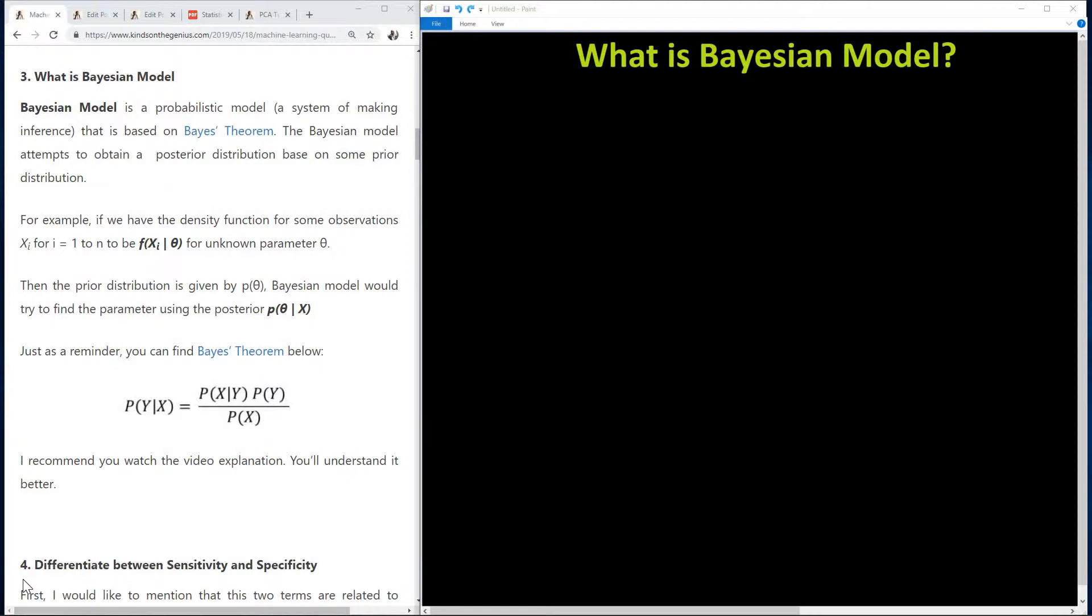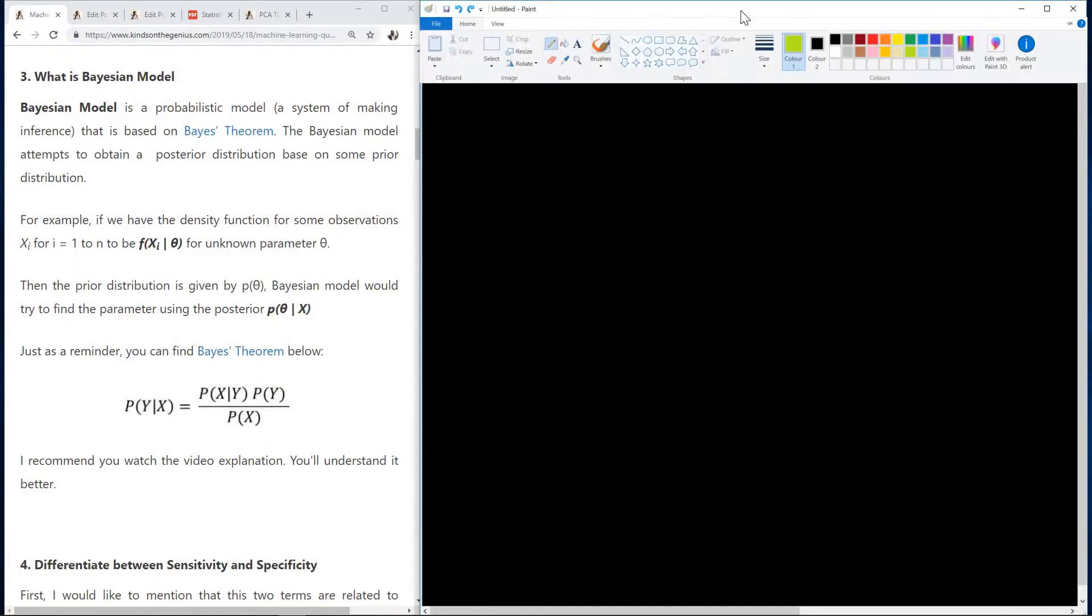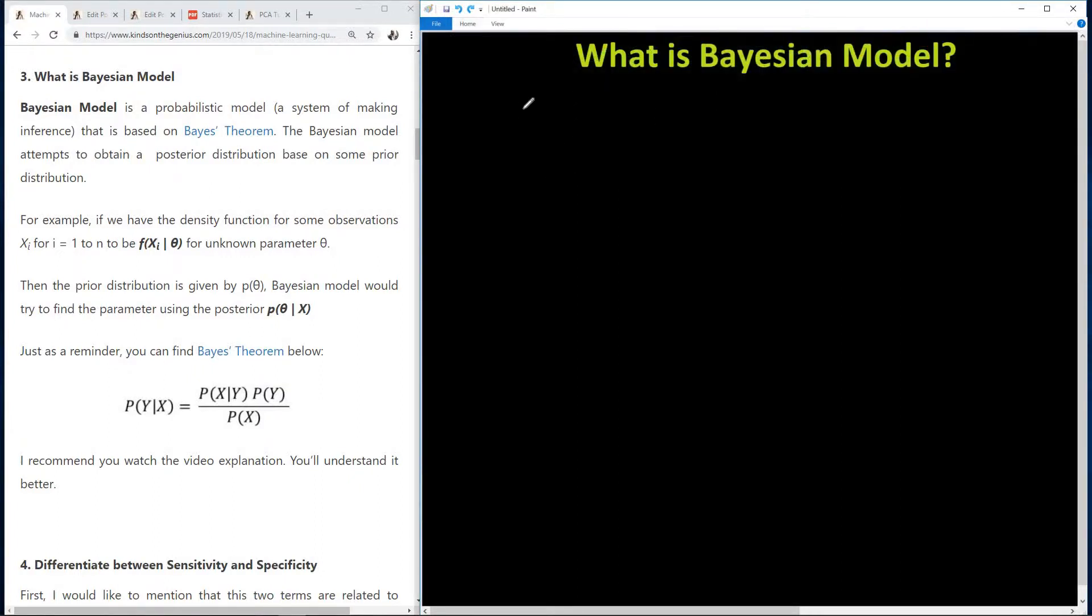So what is a model? A model is simply, in the simplest term, a function that relates one variable to another. For instance, if you are given a data set, let's say X and Y, and you have 2, 3, 4, 5, 4, 6, 8, 10, and you are told to make some sense out of this data set, what you are going to do is to build a model.